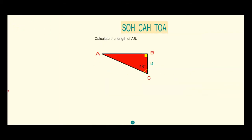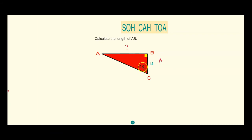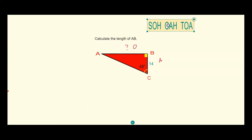Let's try the next question. We're going to calculate the length of AB, which is this side here. Identifying the sides: 14 is the side next to 48 degrees, so that's the adjacent side. Side AB is the side opposite 48 degrees, so that's our opposite side. The function that uses opposite and adjacent — O and A — is tangent.